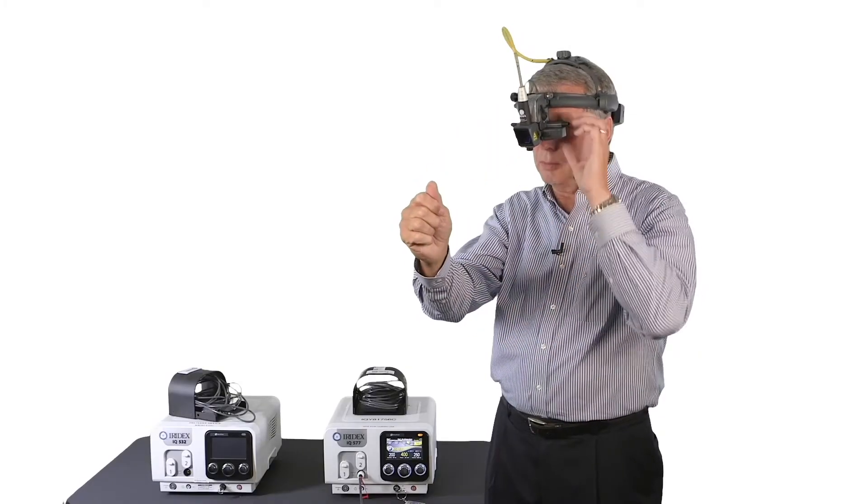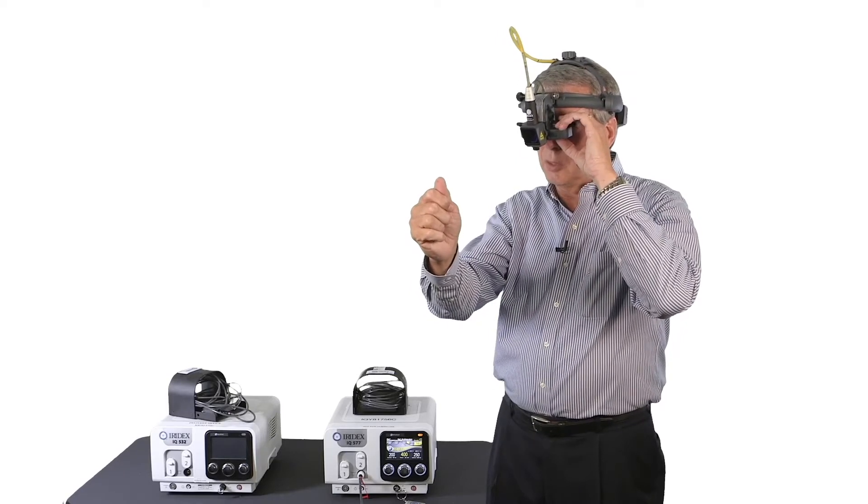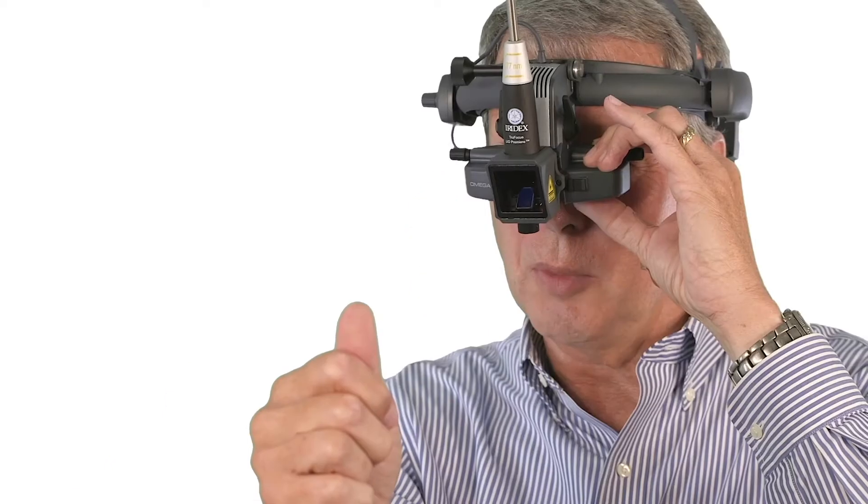Doing just the opposite, close the right eye, adjust the left ocular the same way. At that point, if it's properly adjusted, you should be able to easily read print at about 15 inches.